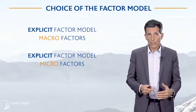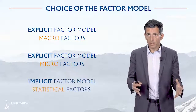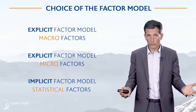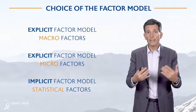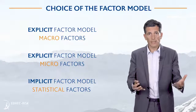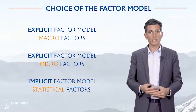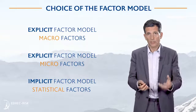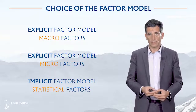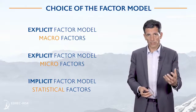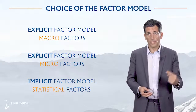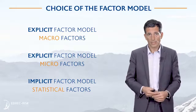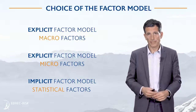Finally, you could be using an implicit factor model where you're not even imposing your view on what the factors should be. You let the data speak through some kind of statistical analysis like principal component analysis, and the data is going to tell you what the factors are. Typically, you constrain the statistical analysis to generate orthogonal, uncorrelated factors, which as we said is helpful for parameter estimates.